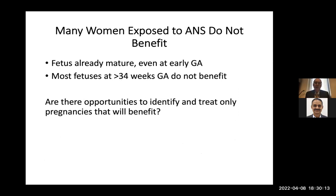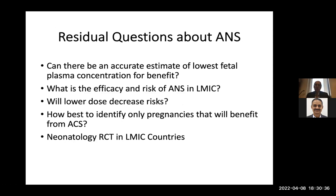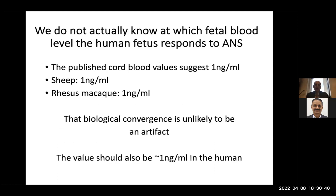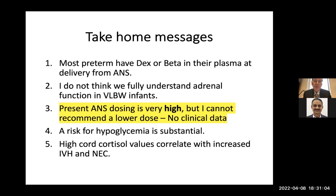Many women exposed to antenatal steroids do not benefit — the fetuses are already mature even at early gestational ages. Most fetuses beyond 34 weeks don't benefit because of a very low risk of RDS or death. Residual questions remain: we don't know the actual low dose the fetus needs to respond. In sheep and macaques it's 1 nanogram per milliliter — due to biological convergence this is unlikely to be an artifact. Most preterms have dexamethasone or betamethasone in their plasma at delivery.